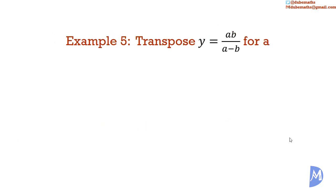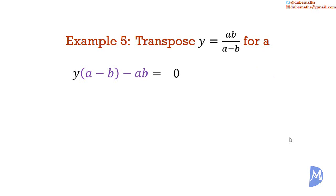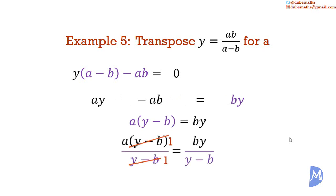Example 5: Transpose Y equals AB over (A minus B), for A. Since A appears more than once, we first multiply both sides by the denominator (A minus B), giving Y(A minus B) equals AB. We expand the brackets using the distributive law to get AY minus BY equals AB, then subtract AB from both sides. Collecting terms with A and factoring out A, then dividing both sides by (Y minus B), we get A is equal to BY over (Y minus B).